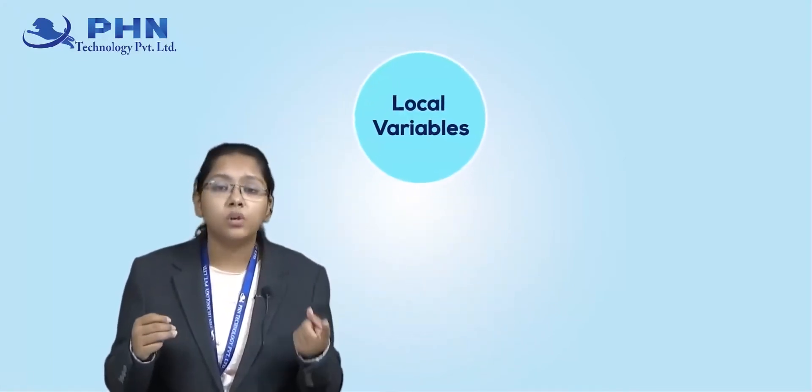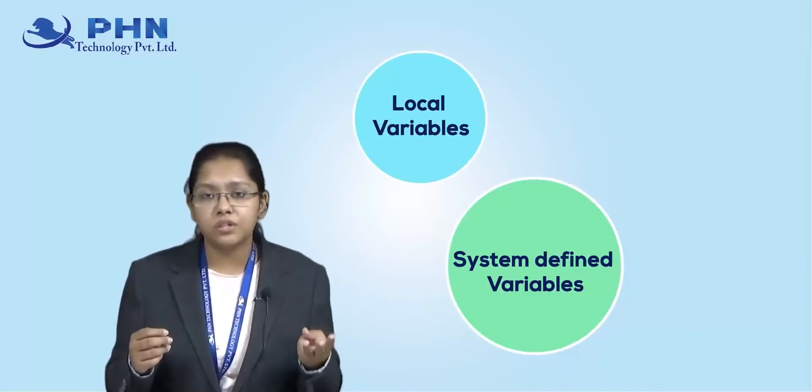Let's say I have the value 10. I cannot directly call 10 because there may be multiple values of 10 in memory. So I need a variable name to identify which specific 10 I am referring to. That is what a variable is — the identification of your values. There are three main types of variables: local variable, system variable, and user-defined variable.